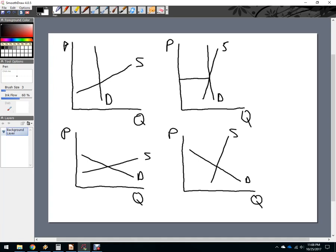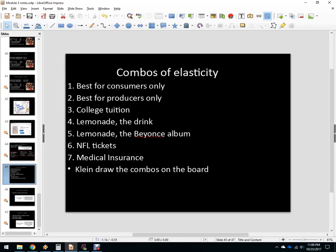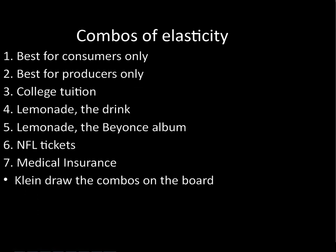In your notes, look at those four combinations and determine which one would be best for consumers only, which would be best for producers only, and then match examples: college tuition, lemonade, a Beyoncé album, NFL tickets — we just talked about supply elasticity there — think about the demand elasticity too. Also consider medical insurance, your own industry, and think ahead to how this applies to your business for your paper. That covers supply elasticity and its applications.